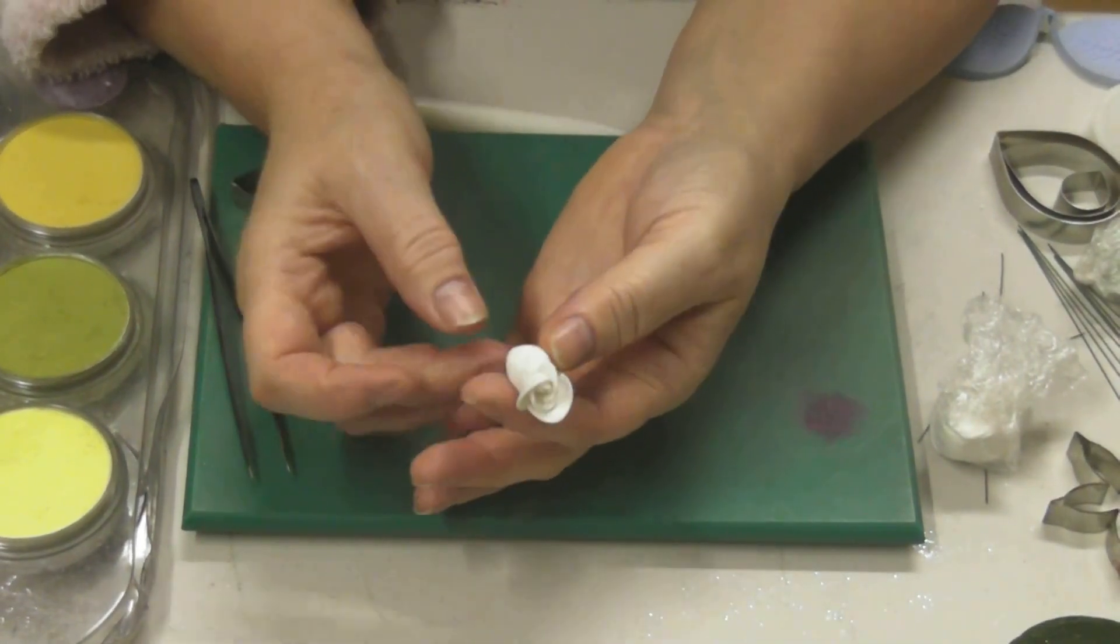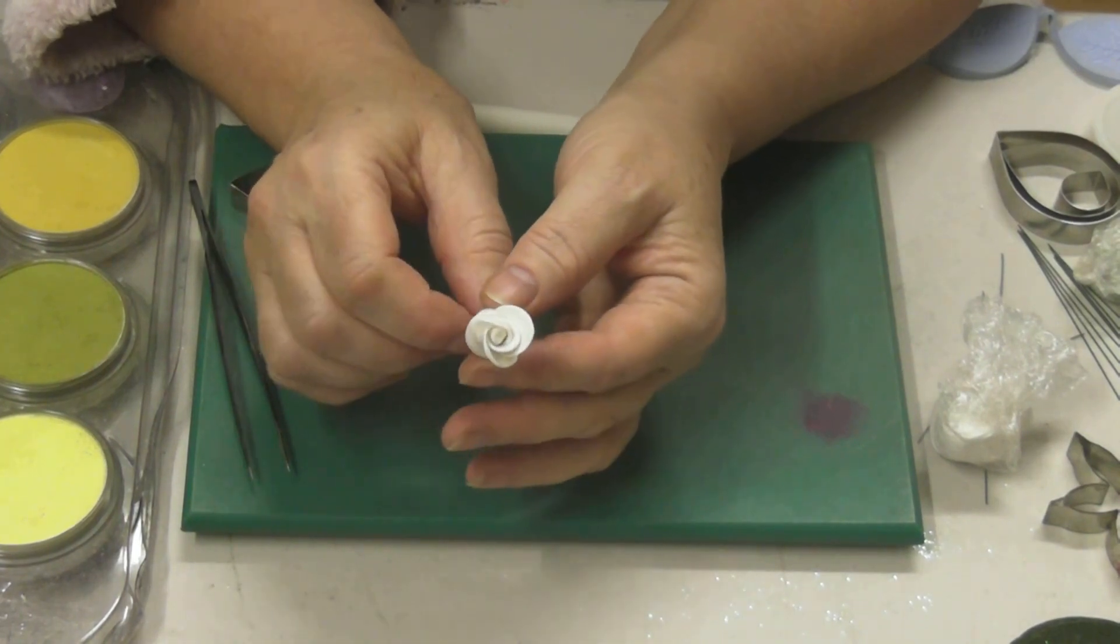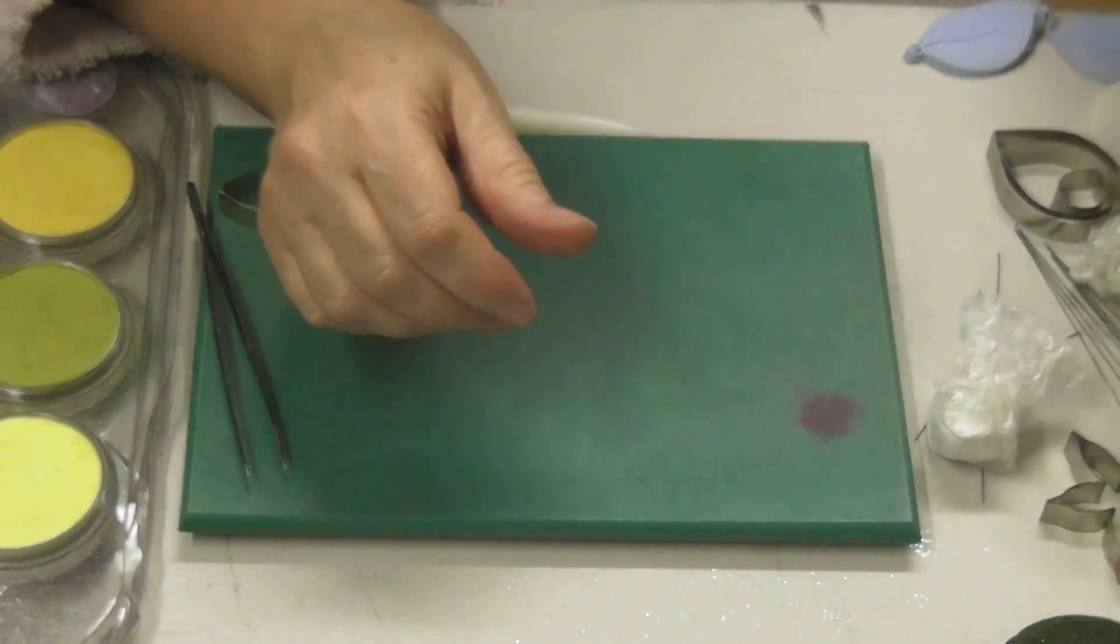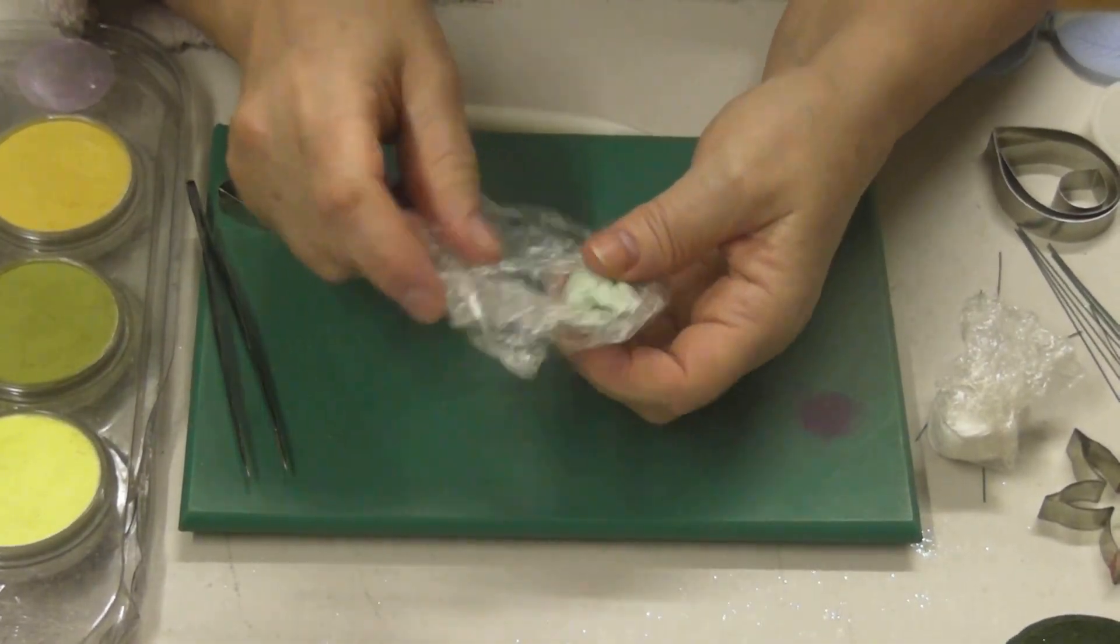The calyx is what is on the base of the flower and basically it finishes it off. I can't show you coloring it today because you need to leave it to dry, but to color it I use the pan pastels and I find it's a fantastic way of using them.